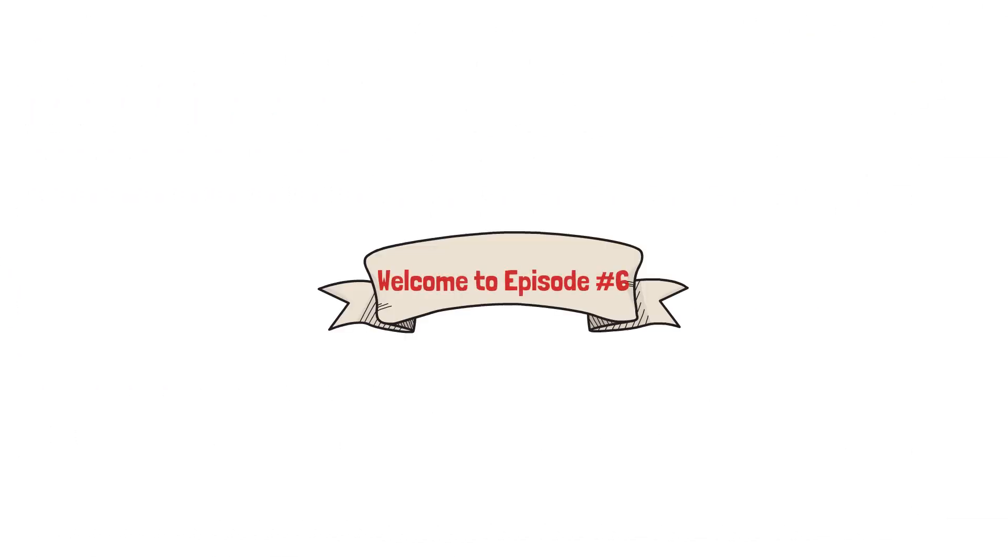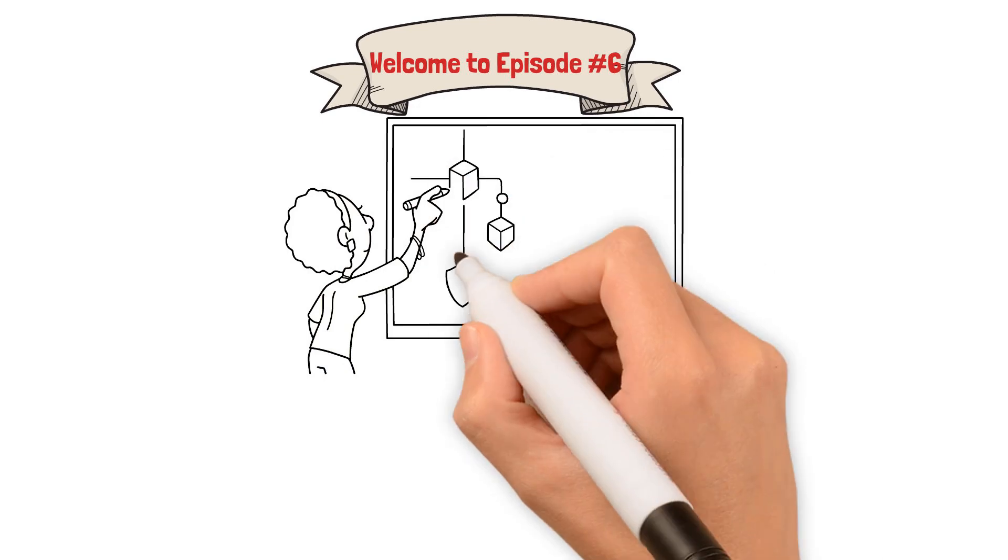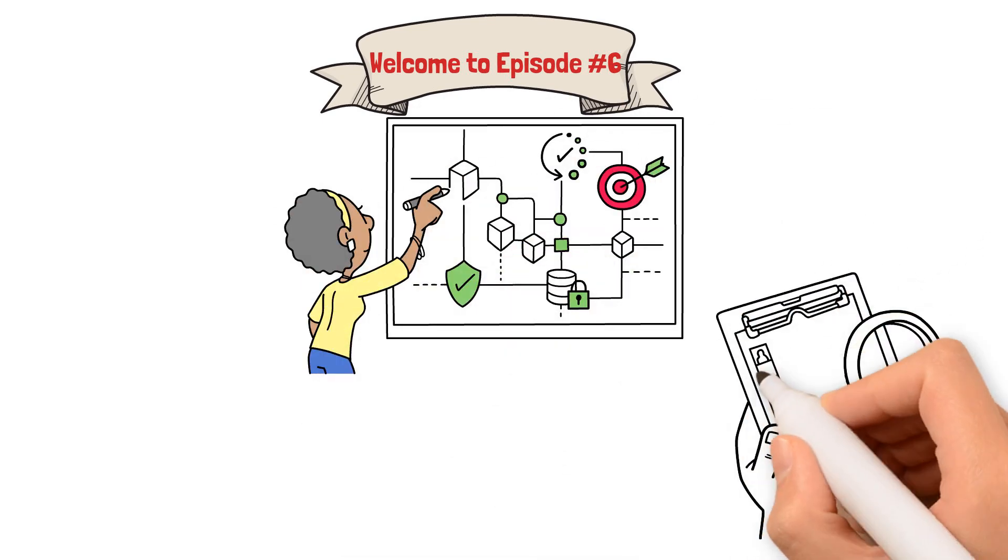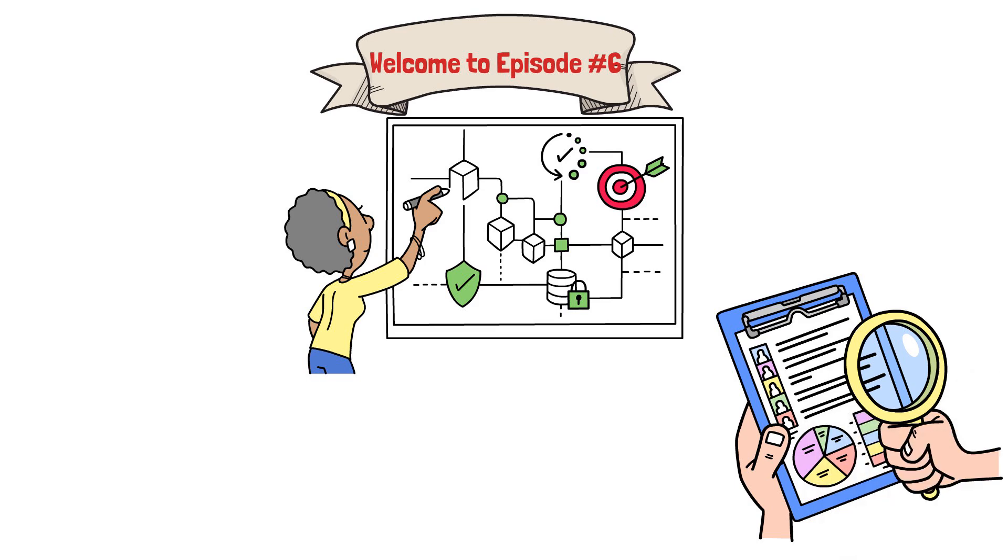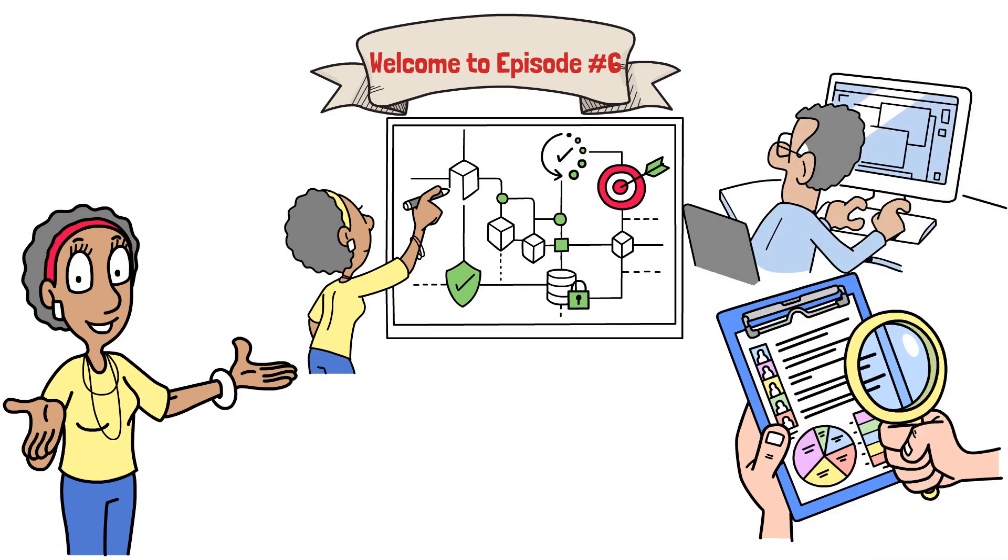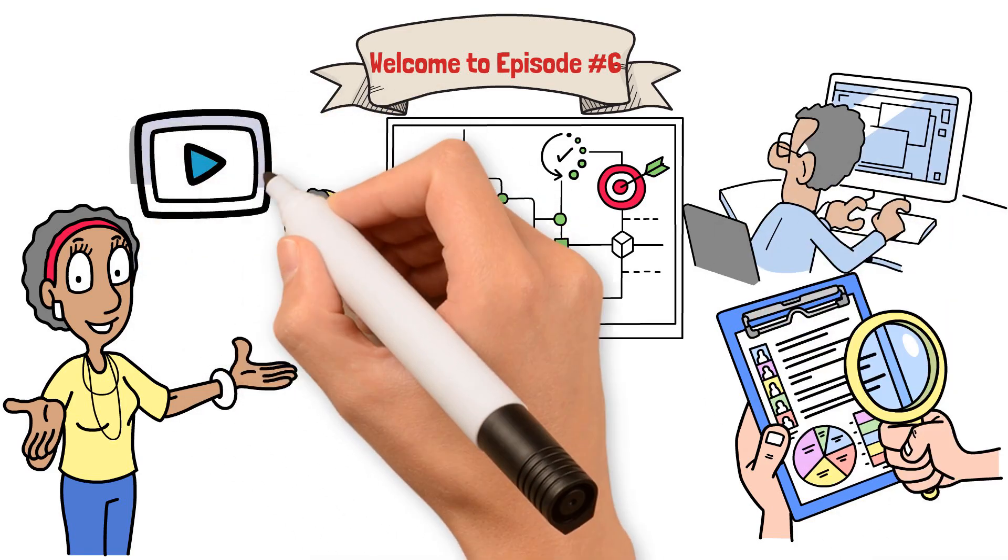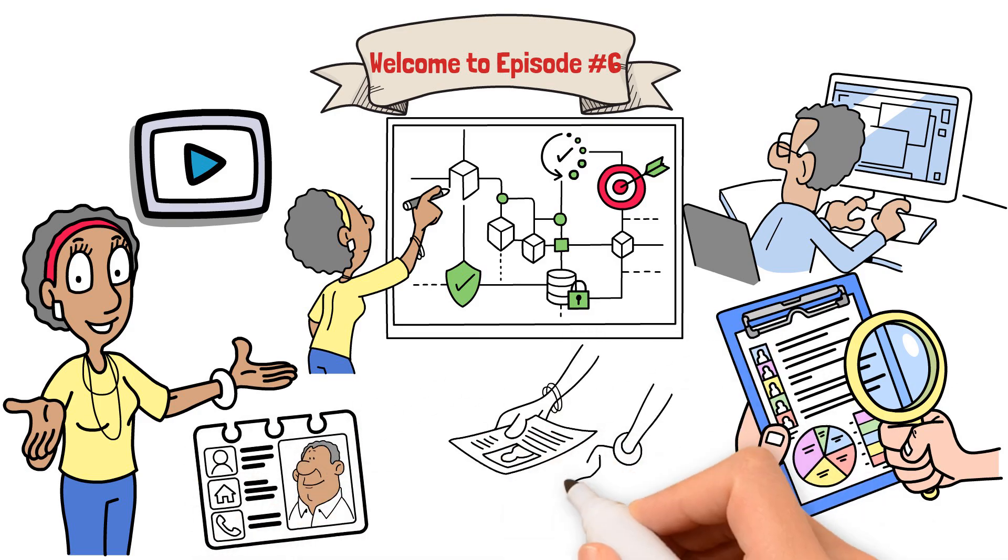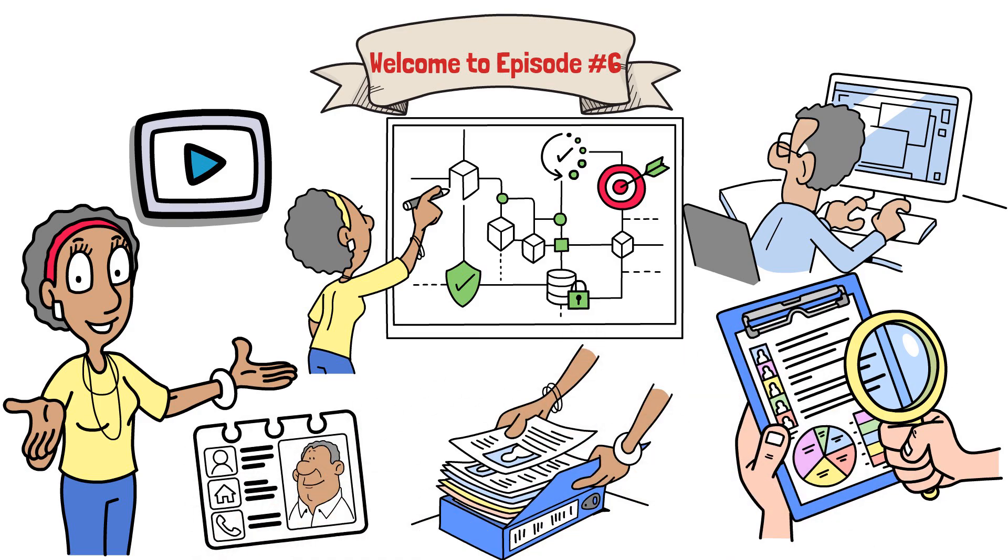Welcome to episode number 6 of Product Management Explained. In this episode, we'll explore the Minimum Viable Product, or MVP, what it is, how to define it, and why it's essential in product development. By the end of this video, you'll know how to identify the core features of an MVP and use it to gather valuable feedback from real users.